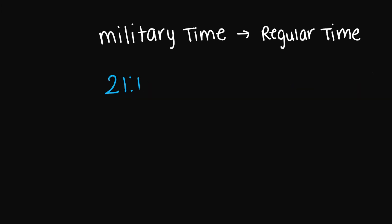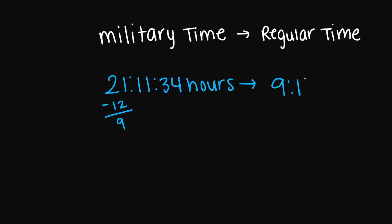Let's try 21:11:34 hours. Regular time — I'm going to subtract 12, and this is going to give me 9. So my regular time is going to be 9:11:34 seconds, and this is going to be p.m.